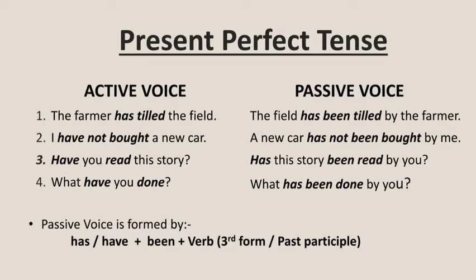Present perfect tense. Here are some examples in present perfect tense, given in both active and passive voice forms. Let us see how to convert sentences from active to passive voice in present perfect tense. Example one: the farmer has tilled the field. Here, the farmer is the subject, has tilled is the verb in present perfect tense, and the field is the object. In passive voice, the sentence becomes: the field has been tilled by the farmer.